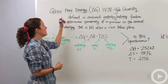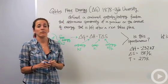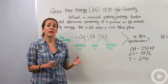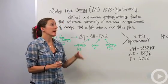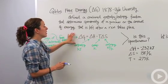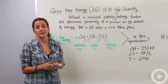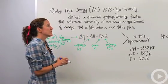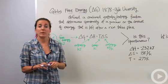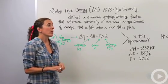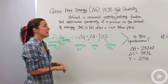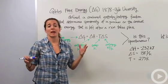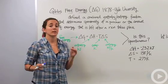Gibbs put together a combination of entropy and enthalpy functions into a new equation that actually tells us if something is spontaneous or not. We know it depends on enthalpy — we like the products to be at lower energy — and we also like things to be very messy and disorderly. We like high entropy and low enthalpy.